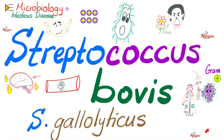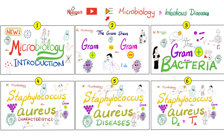What is going on? It's Medicosis Perfectionitis, where medicine makes perfect sense. Let's continue our microbiology and infectious diseases playlist. In previous videos we talked about various types of Streptococci. Today we'll talk about Streptococcus gallolyticus, formerly known as Streptococcus bovis. Bovis comes from bovine, which means cow.